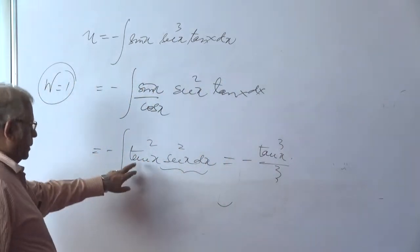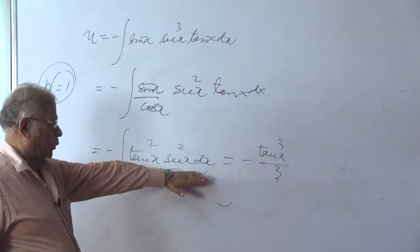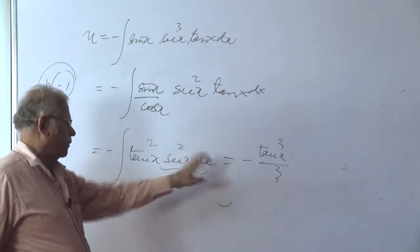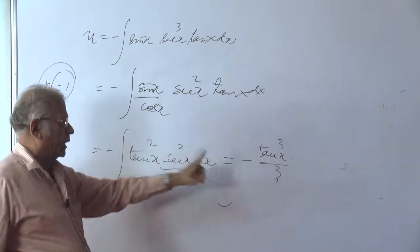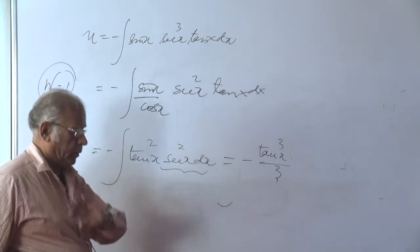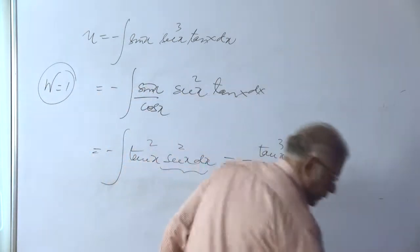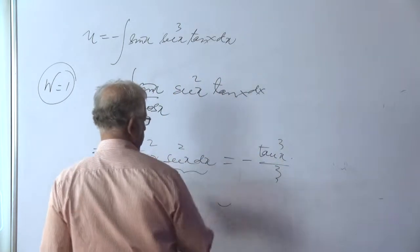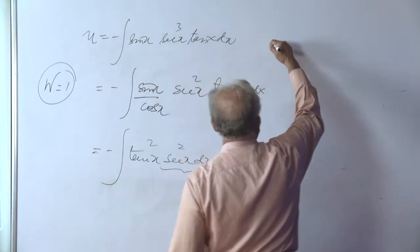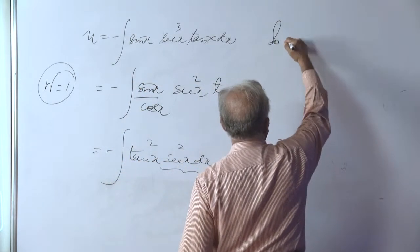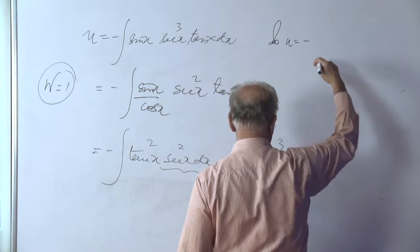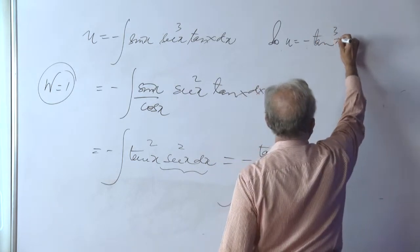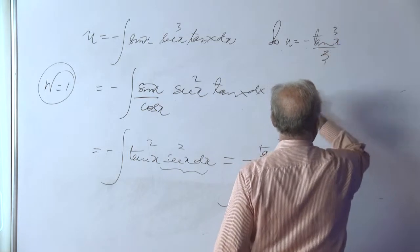I repeat, if we take tan x as z, sec square x dx is dz. So, the integration is minus of z square, that is minus of z cubed over 3. So, minus of tan cubed x over 3. That is the value of u, which we will capture somewhere. So, let's capture it here. Our u is equal to nothing but minus of tan cubed x over 3.